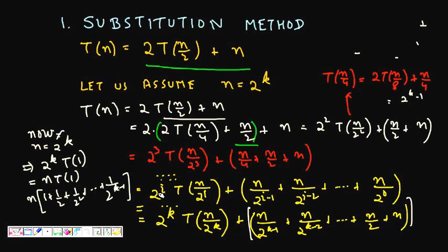Following this pattern, after I iterations we get T(N) = 2^I · T(N/2^I) + N/2^(I-1) + N/2^(I-2) + ... + N/2^0. This continues until N/2^K = 1, i.e., we reach T(1) — the base case. It stops at 2^K · T(N/2^K) + N/2^(K-1) + N/2^(K-2) + ... + N/2 + N.